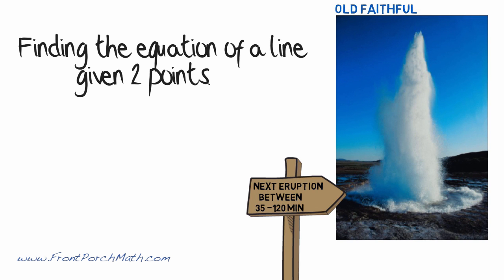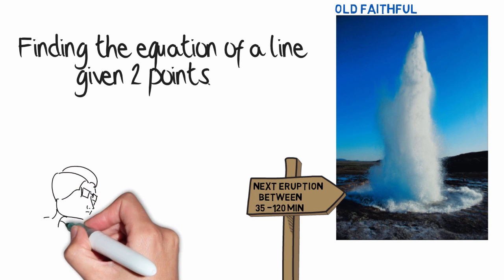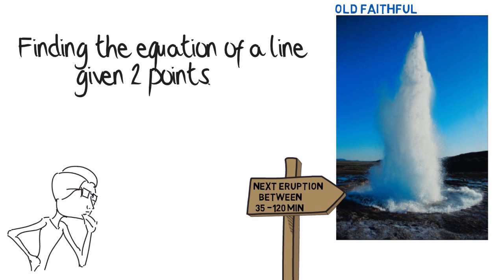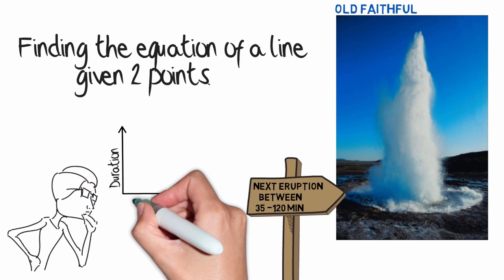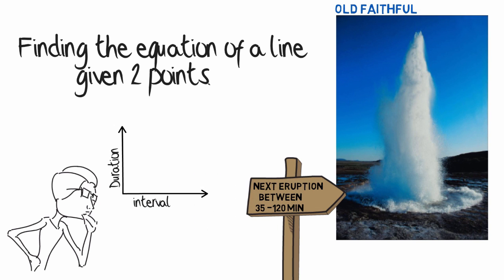It erupts every 35 to 120 minutes. The National Park Service found that there is a relationship between how long an eruption lasts, which is called the duration, and how long it is before the next eruption occurs, which is called the interval. They found that the relationship is approximately linear.